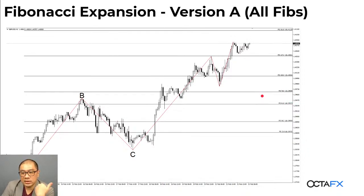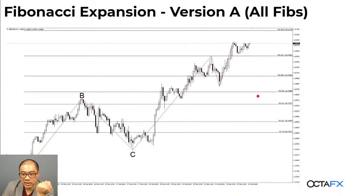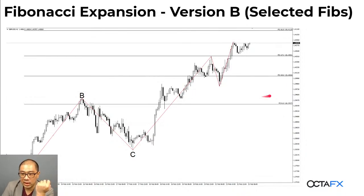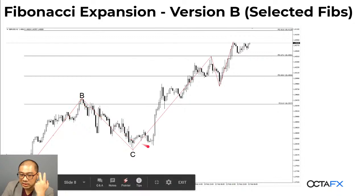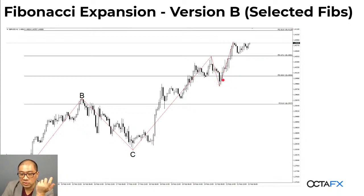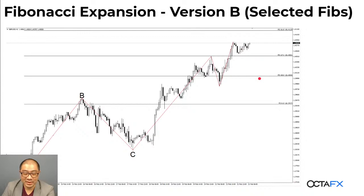Jadi kalau semakin sedikit garisnya itu lebih oke. Kalau kalian lihatin reaksi harganya, dia nggak begitu reaksi terhadap 23.6, 50%, 38.2, 78.6 di expansion. Tapi reaksinya itu lebih di 100 sama 161.8 dan 127.2. Jadi kalau kalian lihatin dari ABC yang diproyeksikan dari bawah, kalian bisa lihatkan berakhirnya itu di mana 127.2 — pullback ke 100, tes sebagai support, baru lanjut naik ke atas. Intinya gampang, itu doang — expansion.